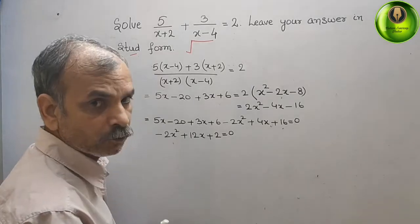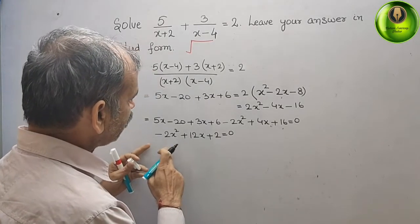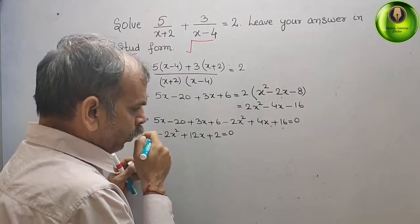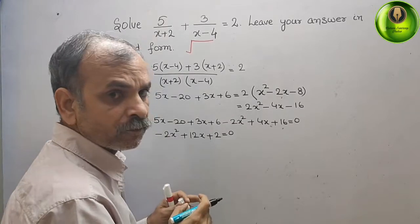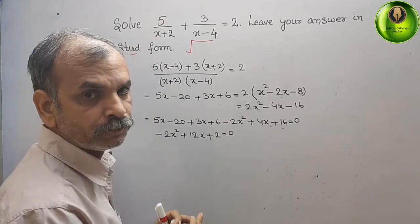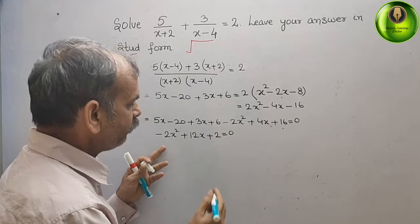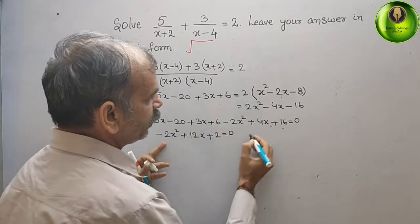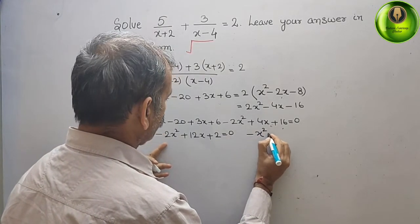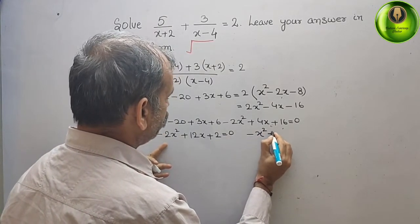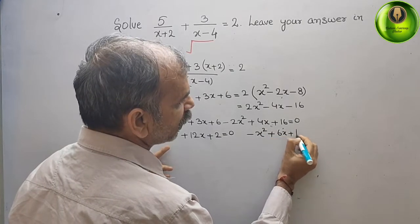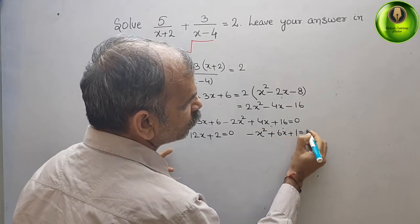We can see that we can divide the whole equation by -2. This gives us x² - 6x - 1 = 0, or equivalently -x² + 6x + 1 = 0.